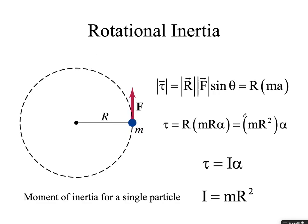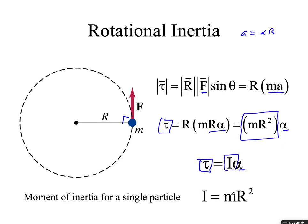For a mass m at radius r moving in a circular path, torque equals RF sin θ. Since θ is 90°, we replace force with ma, and since tangential acceleration a equals alpha times r, we get torque equals m r² alpha. Since torque equals I times alpha, this means the rotational inertia for a single discrete particle is I equals mr². That's where we get the rotational inertia for a discrete mass.